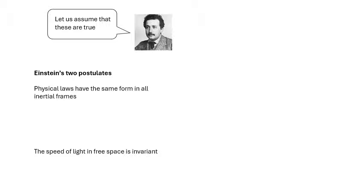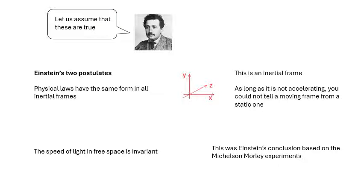An inertial frame is just a set of Cartesian xyz coordinates — a frame in which things happen. As long as it's not accelerating, you wouldn't be able to tell a moving frame from a stationary one; all the laws of physics apply equally.